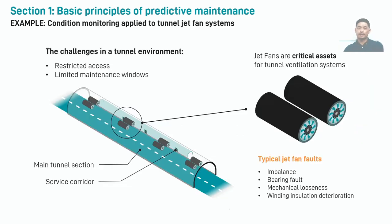Let's take a look at our tunnel fan example. We will gradually build up our tunnel diagram over the course of this presentation, adding the different elements as we discuss them, starting now with the fans themselves and some basic elements of the tunnel environment. In our diagram, we can see pairs of jet fans installed in the main tunnel section, with a service corridor running alongside the tunnel. The jet fans form part of the tunnel ventilation system and in normal operation are there to provide acceptable air quality for tunnel users, but their most critical function is during smoke and fire events where the fans are used to assist in fire and smoke control, which is essential for safe evacuation and to support firefighting operations. The slide shows a list of typical jet fan faults, and while these faults are common to most types of fans and rotating machinery, we are faced with additional maintenance challenges presented by the tunnel environment.